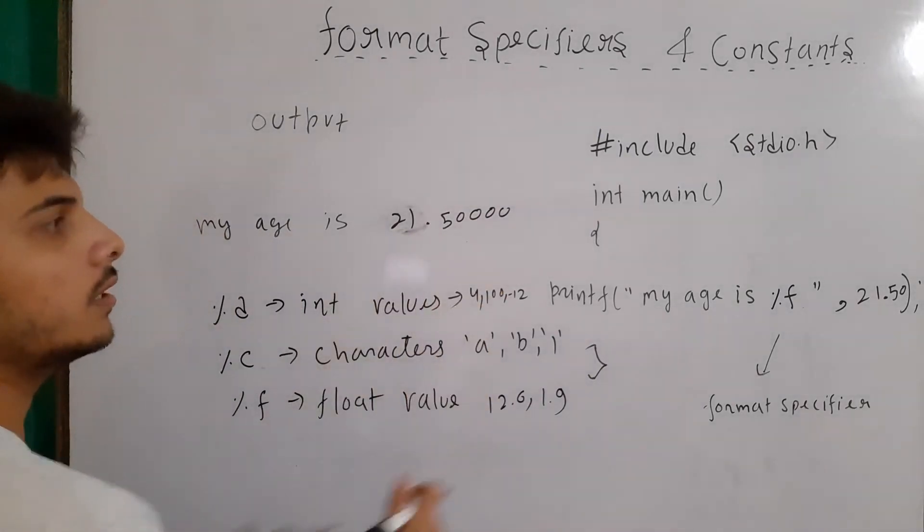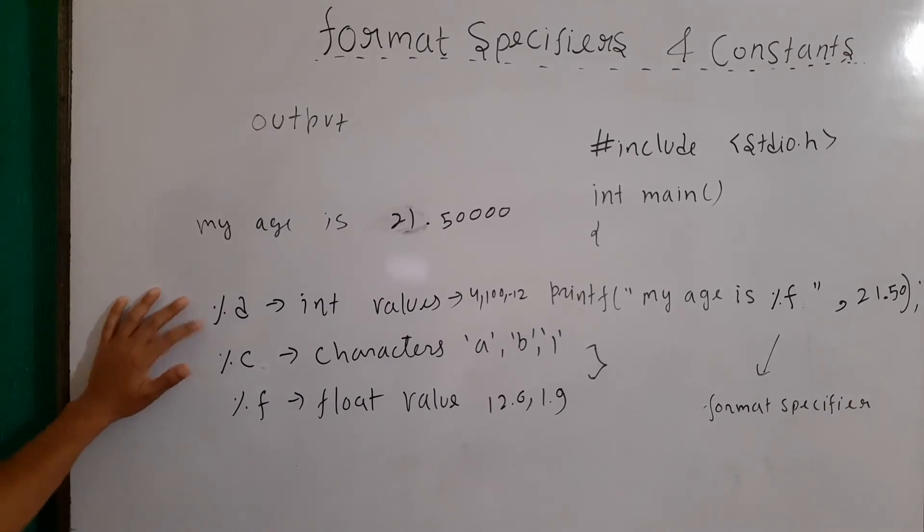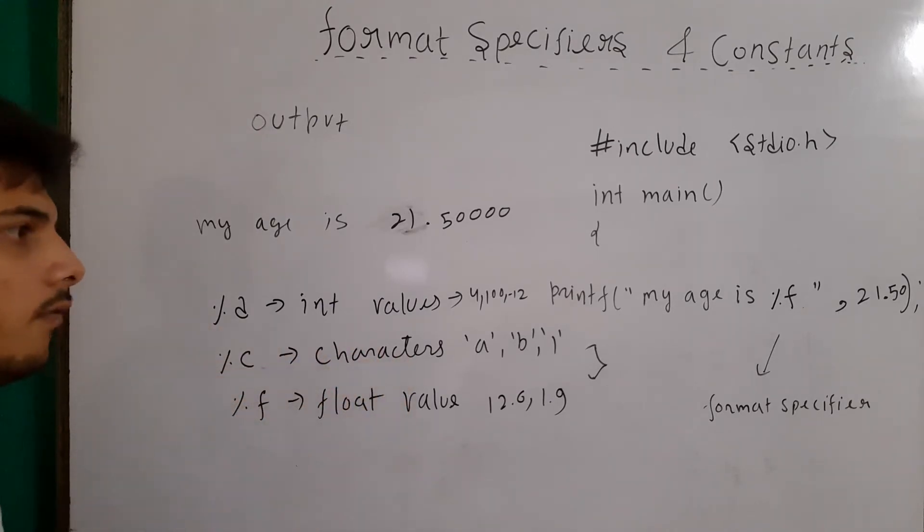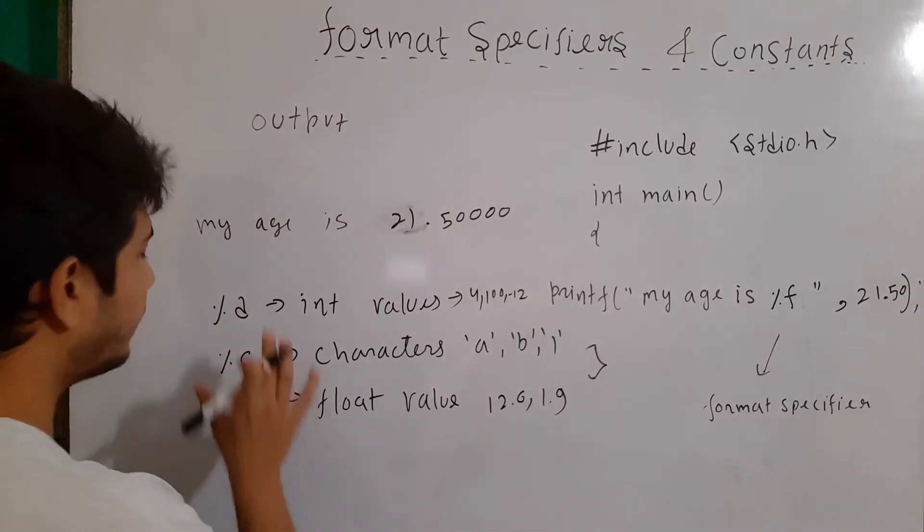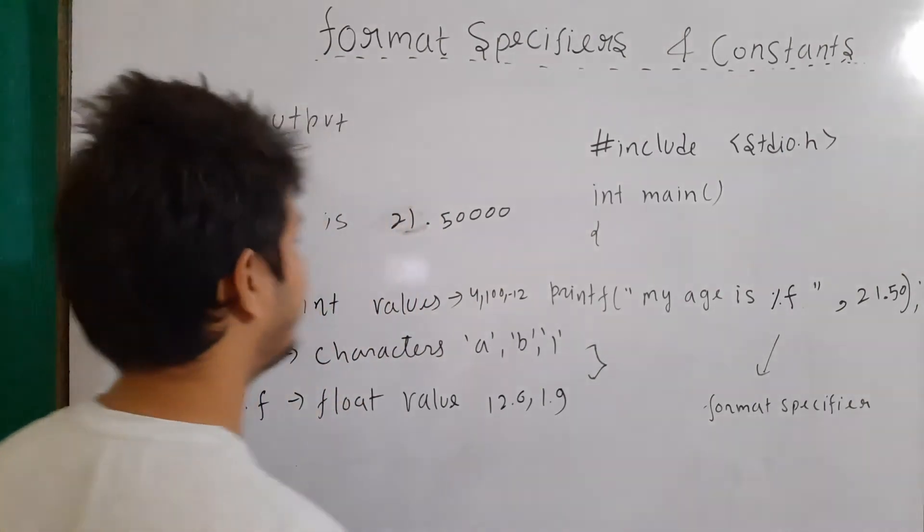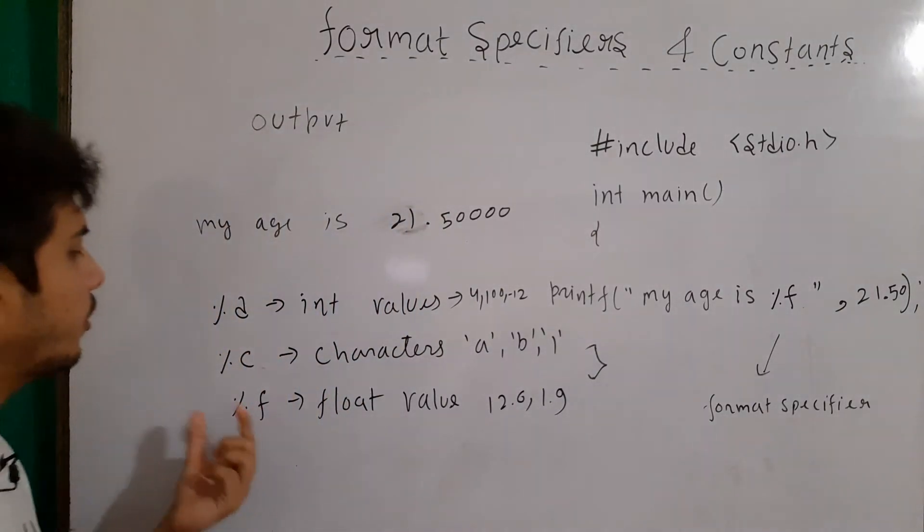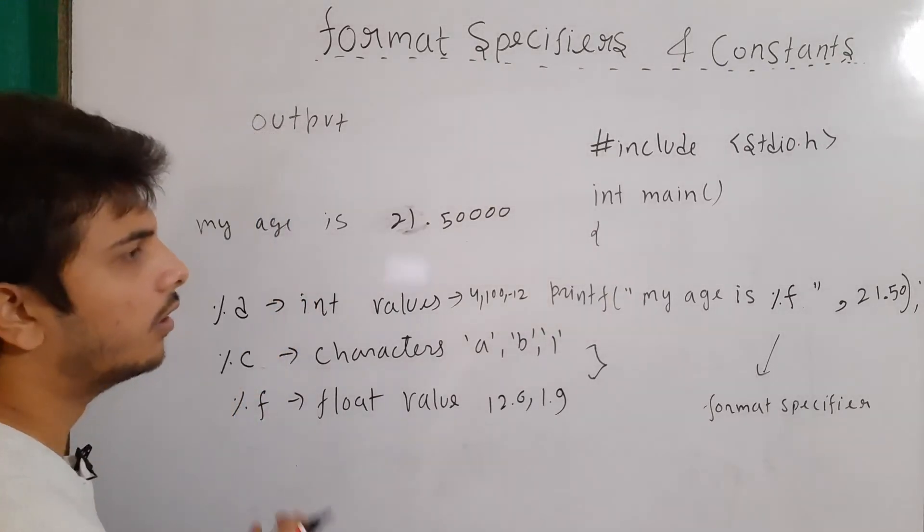Basically, it depends on the size of our variable. So point here is that %d format specifier for integer values, %c for characters, and %f for float values. Right now, maybe this is not looking so much important, but this is actually the heart of our C programming language that whether we are taking the input or output, we will be using always some format specifier.